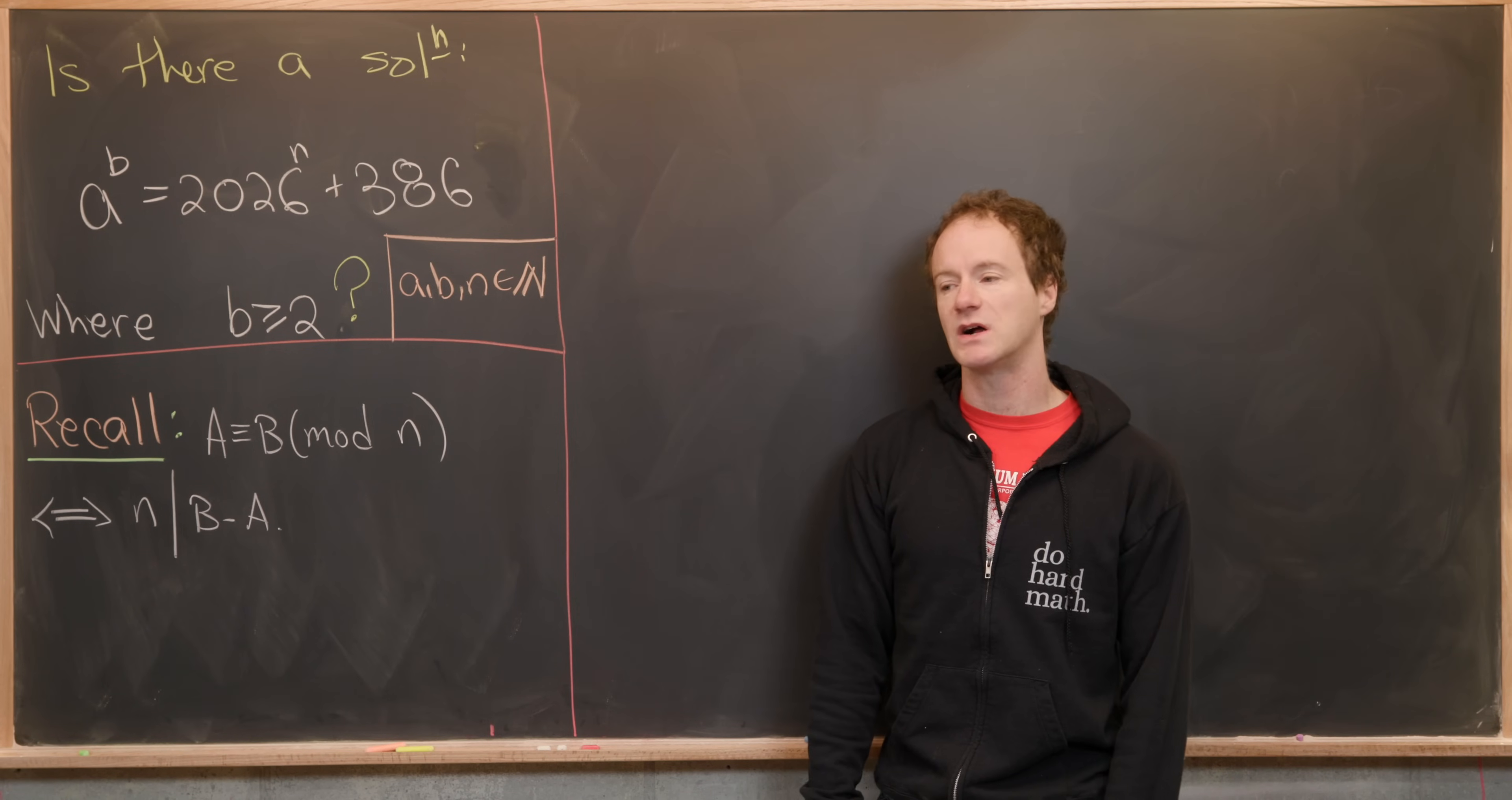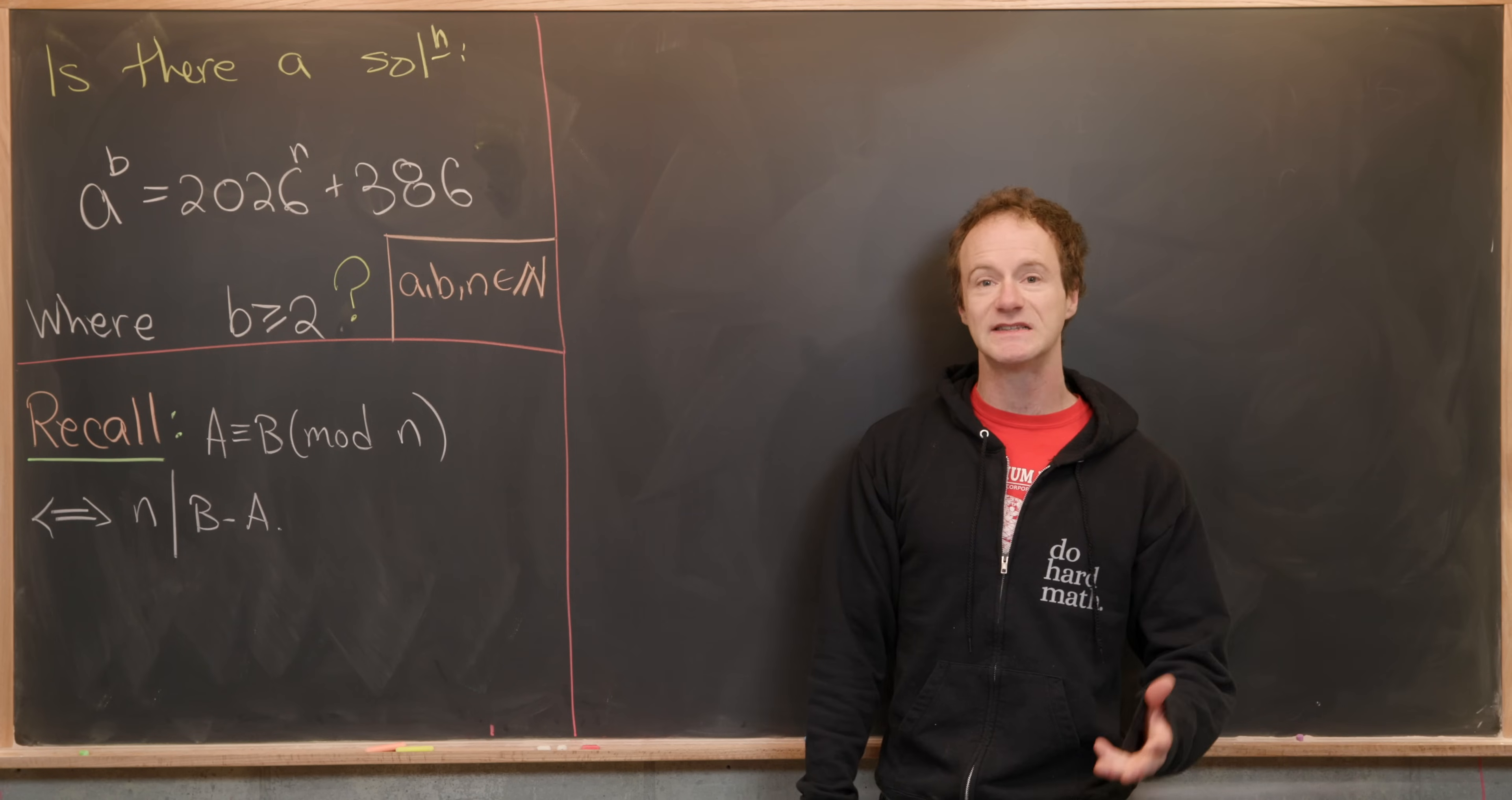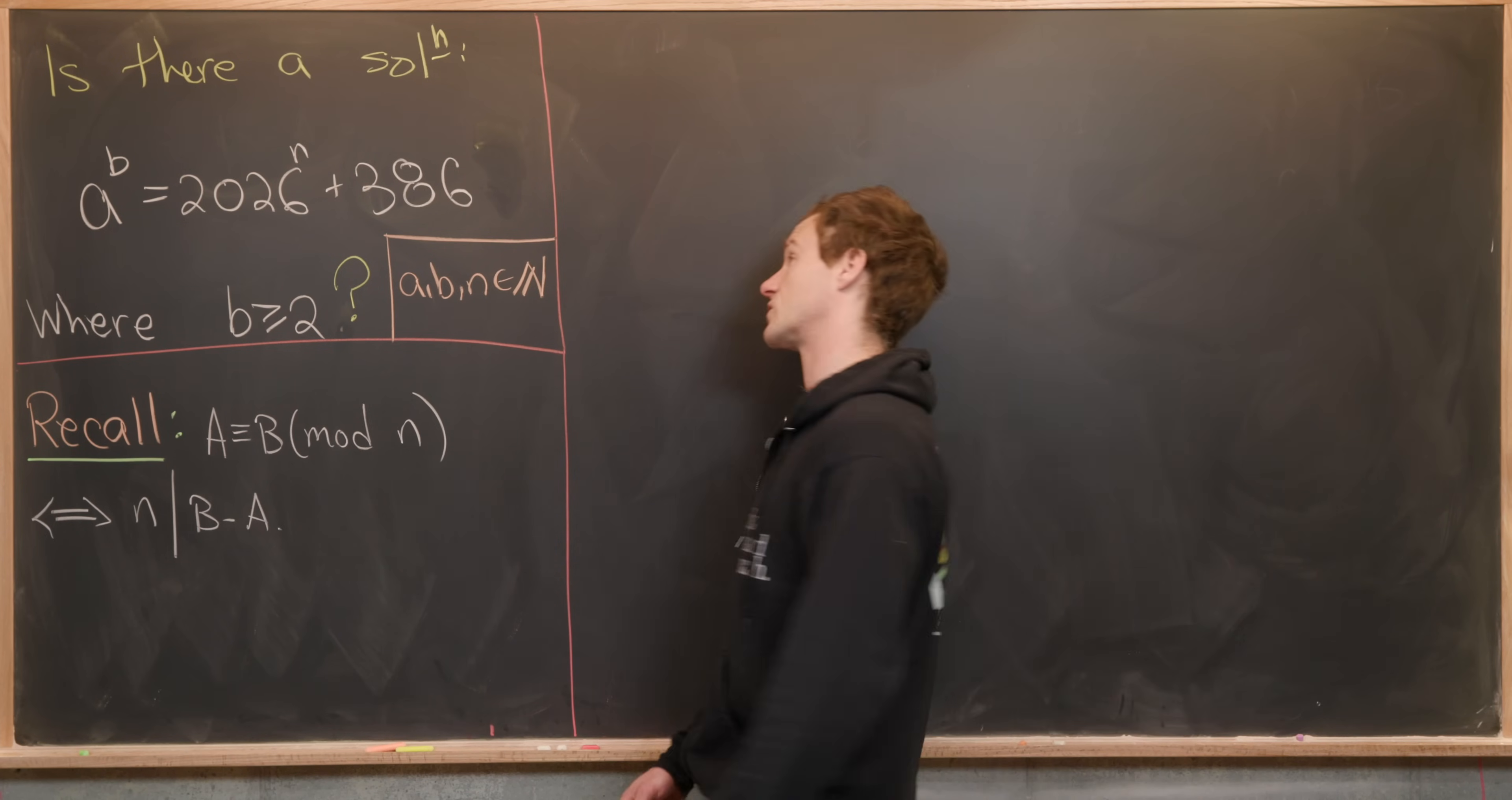And the nice thing about working modulo n is that for certain values of n there are only certain numbers that are perfect squares. And that's exactly what we'll use here. So what we'll do is reduce this equation modulo 27 and modulo 5 and see that any sort of solution that we would have would create some sort of inconsistency. Okay so let's go ahead and reduce modulo 27 first.